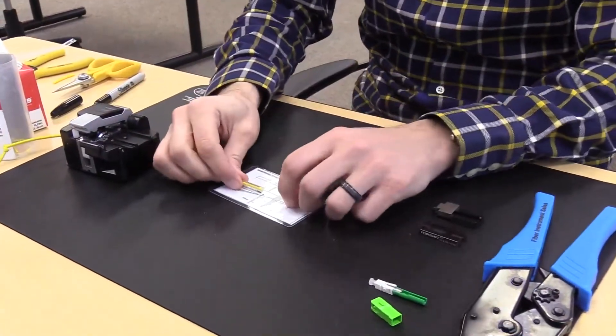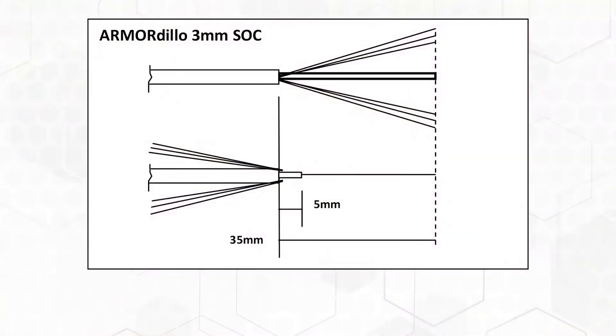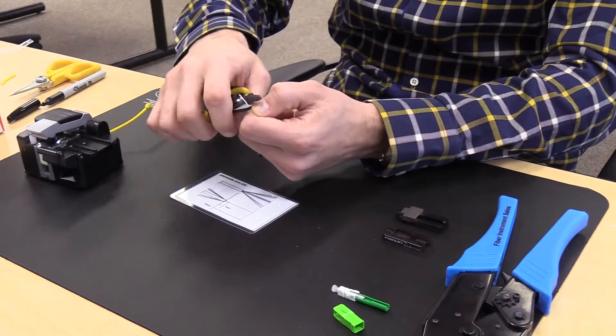Back to the strip chart to remove the 900-micron buffer by measuring 5mm. Strip a quarter of an inch at a time so you don't run the risk of breaking the glass.